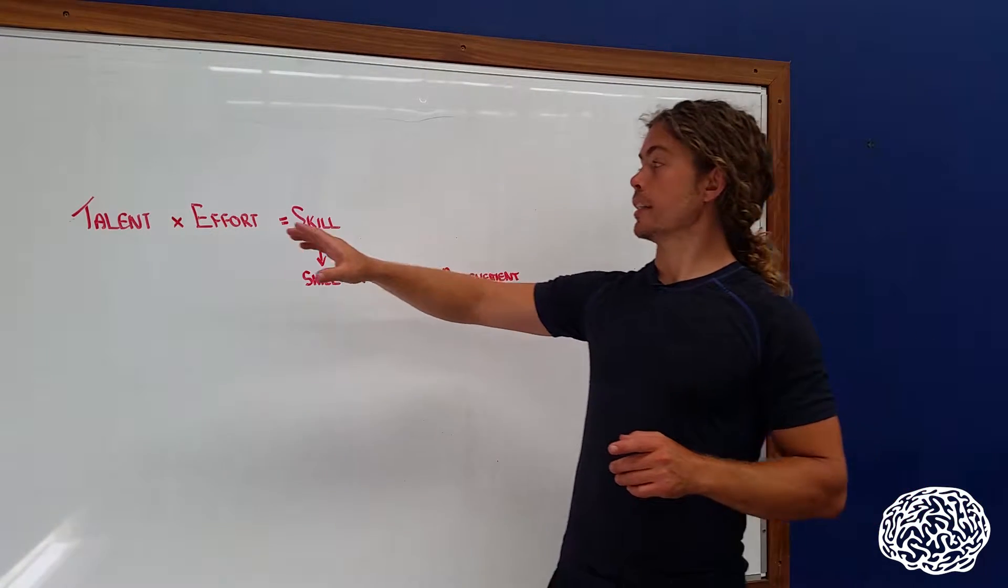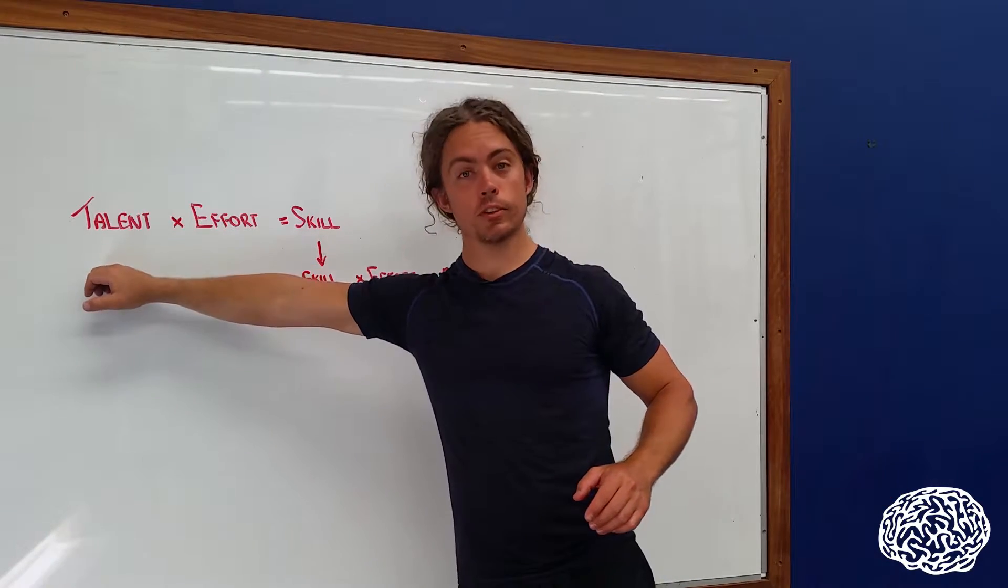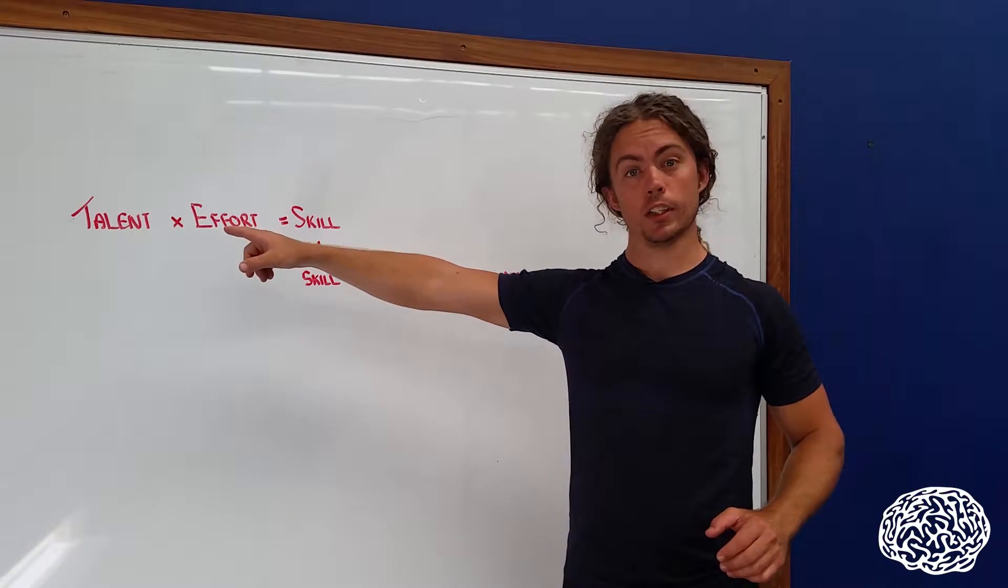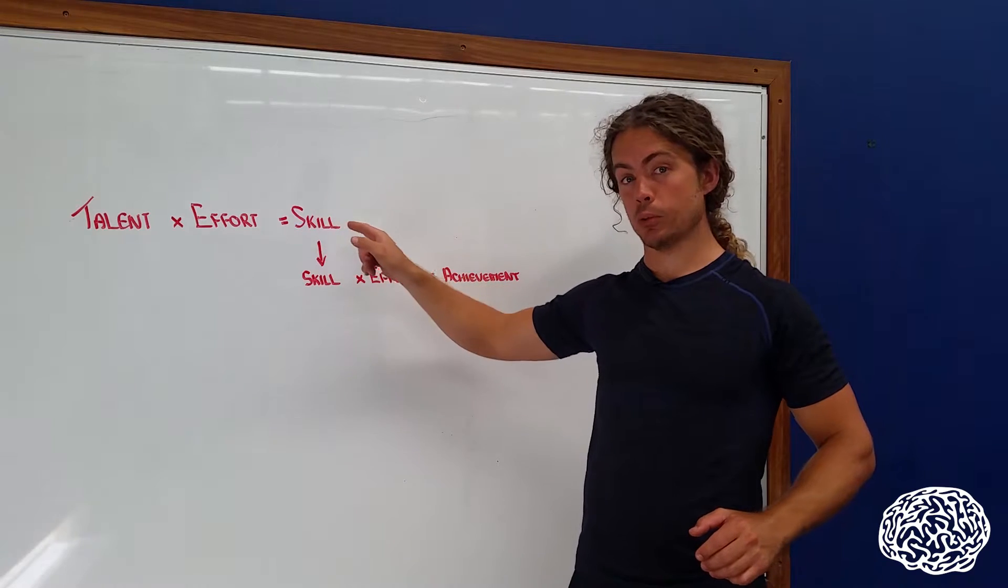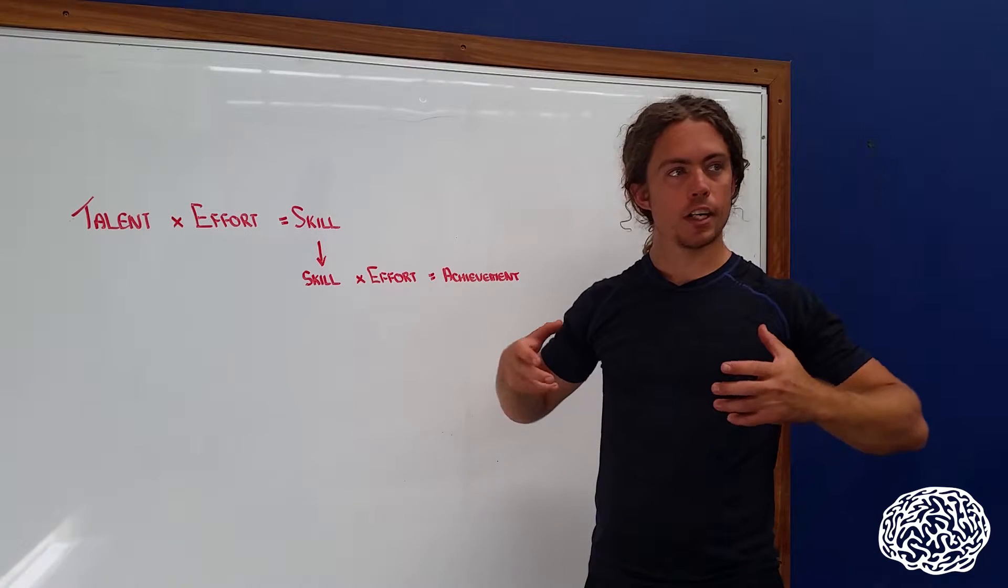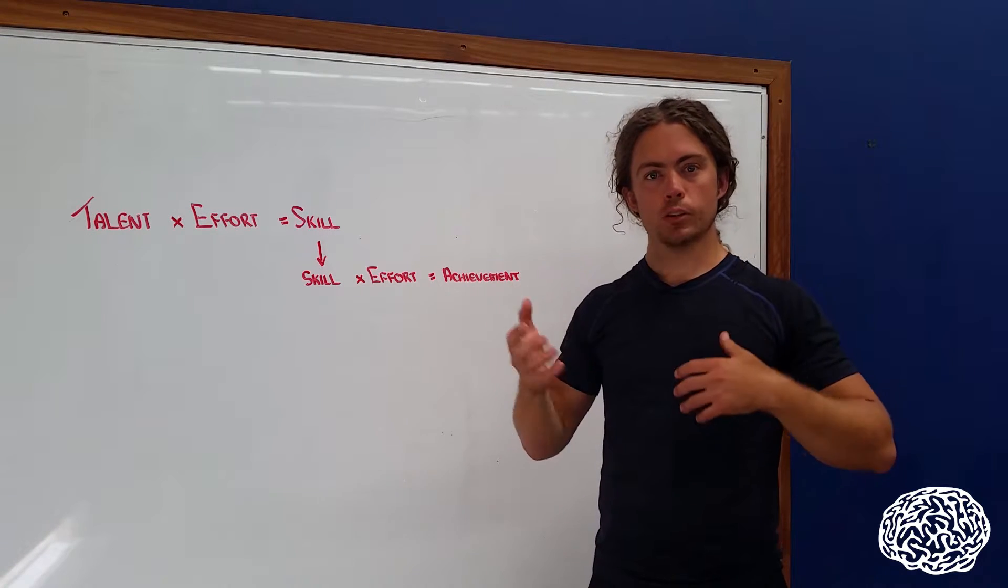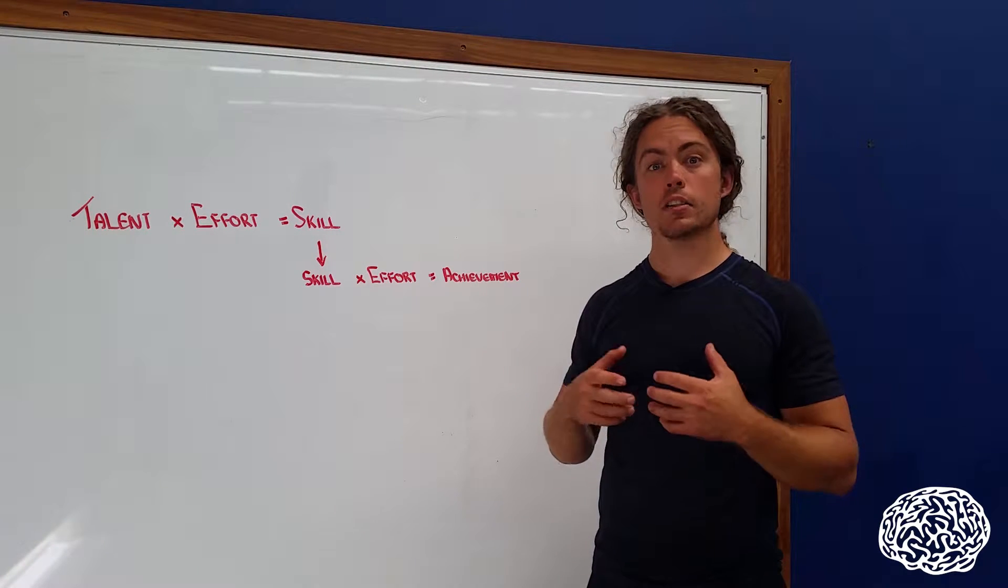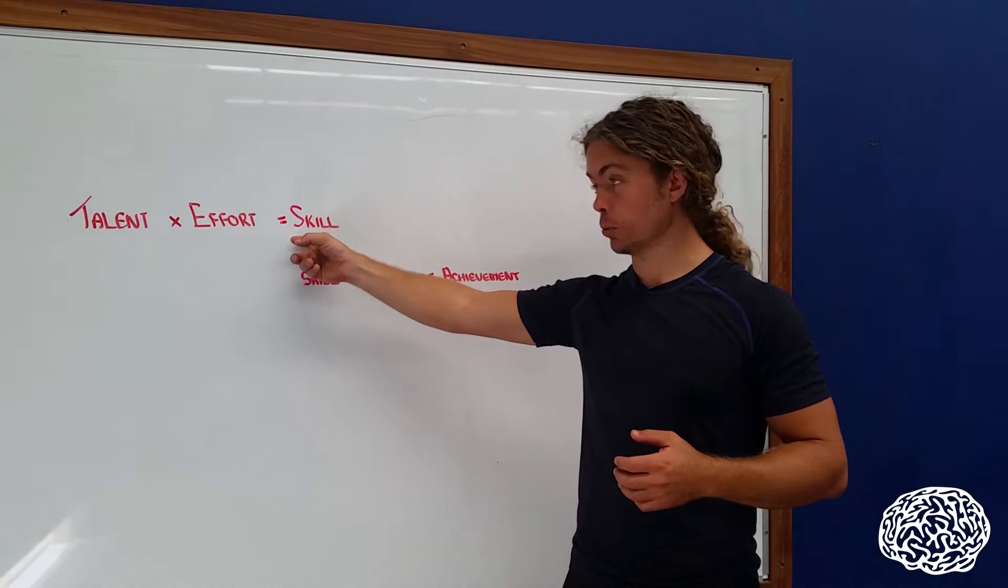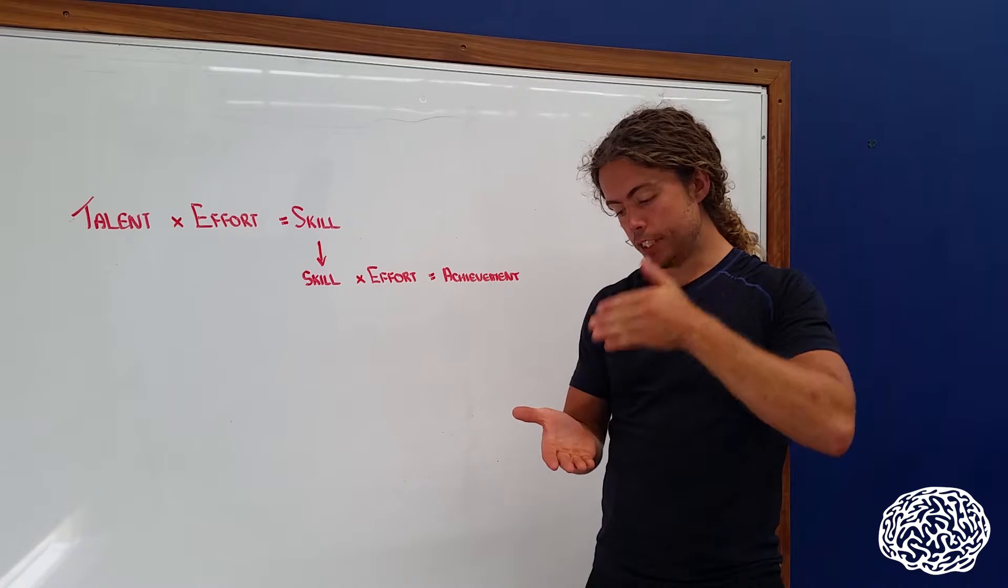This formula essentially means that there are two parts to getting from being a person who's interested in a topic to getting through to achieving something in that topic. So the first part of the formula is talent times effort equals skill. So what this is really saying is that anyone out there can have a whole heap of fundamental underlying physical and mental and character traits that they can develop over time. And if those are developed, they turn into skills. But they only develop when you put in dedicated, deliberate effort into those.